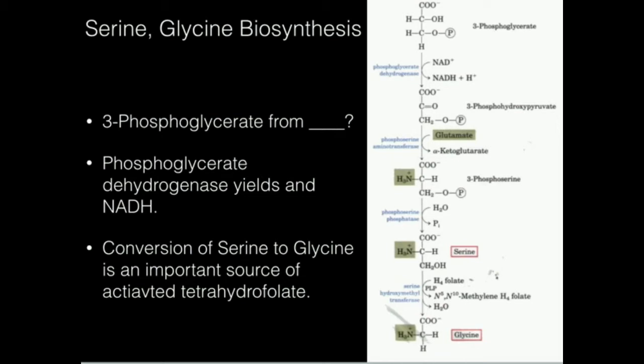So it turns out we, our cells, can take 3-phosphoglycerate and transform them into serine, glycine, and cysteine. So this is a glycolytic intermediate, but we're going to take it and use it for something else.